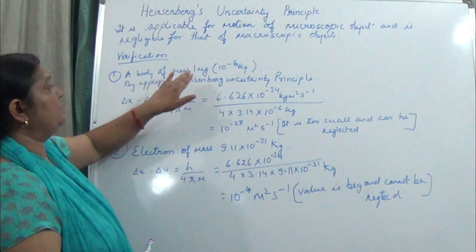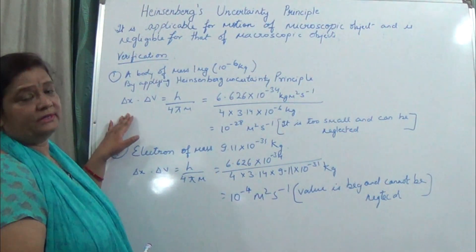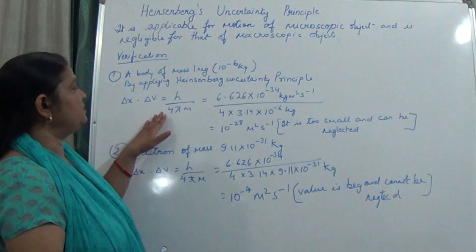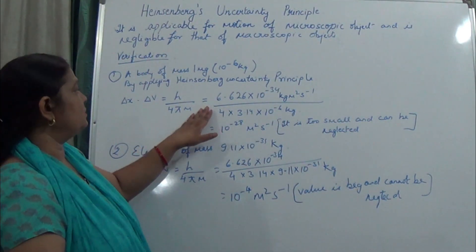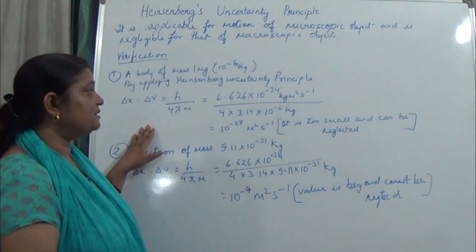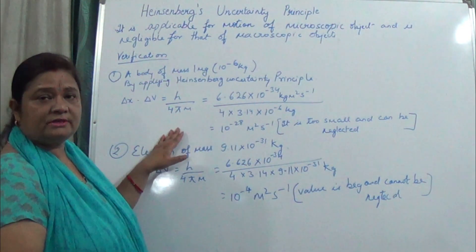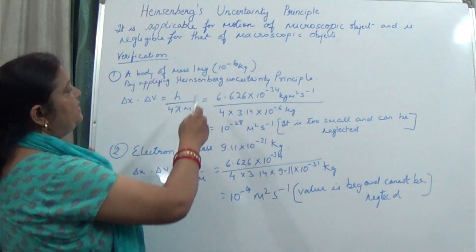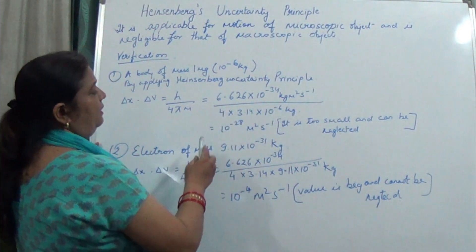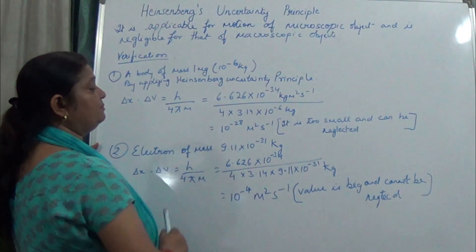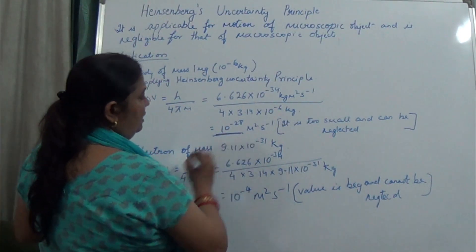Suppose a body of mass 1 milligram, where 1 milligram equals 10 to the power minus 6 kg. Applying Heisenberg's principle: change in position times change in velocity equals h upon 4πm. Putting in the values — Planck's constant is 6.626 × 10⁻³⁴ kg·m²/s, 4π where π is 3.14, and mass is 10⁻⁶ kg — after substituting, the answer is approximately 10⁻²⁸ m²/s. This is a very small quantity.